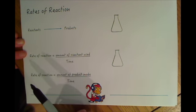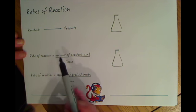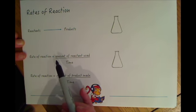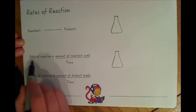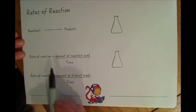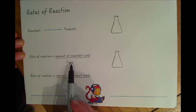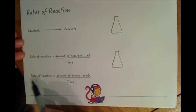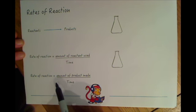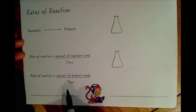This video is about rates of reactions, so we're talking about how quickly reactions are happening. There's two ways in which you can measure the rate of reaction. You could work out the rate of reaction by the amount of reactant used up over time, or you could work out the rate of reaction by the amount of product made over time.